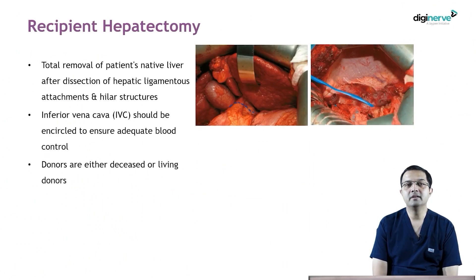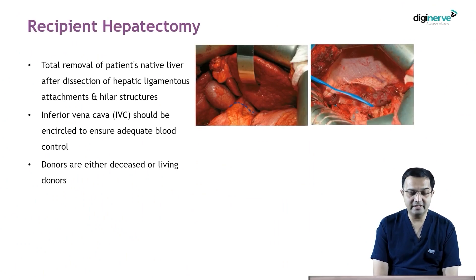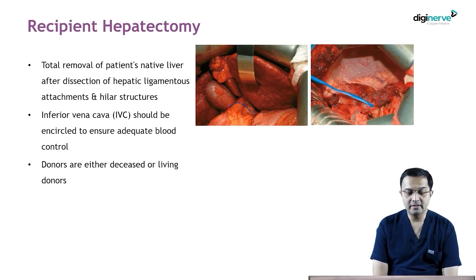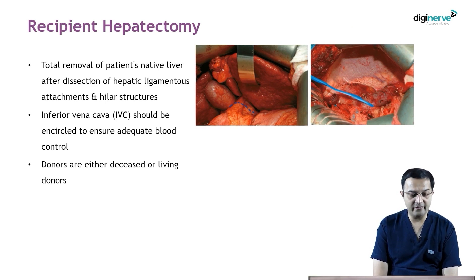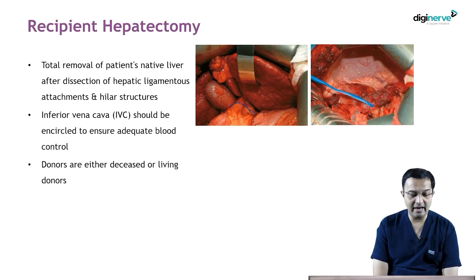The first step in liver transplantation is recipient hepatectomy — that is, you have to take out the diseased liver. In recipient hepatectomy, we do the total removal of the patient's native liver after dissection of hepatic ligament attachment and hilar structures.